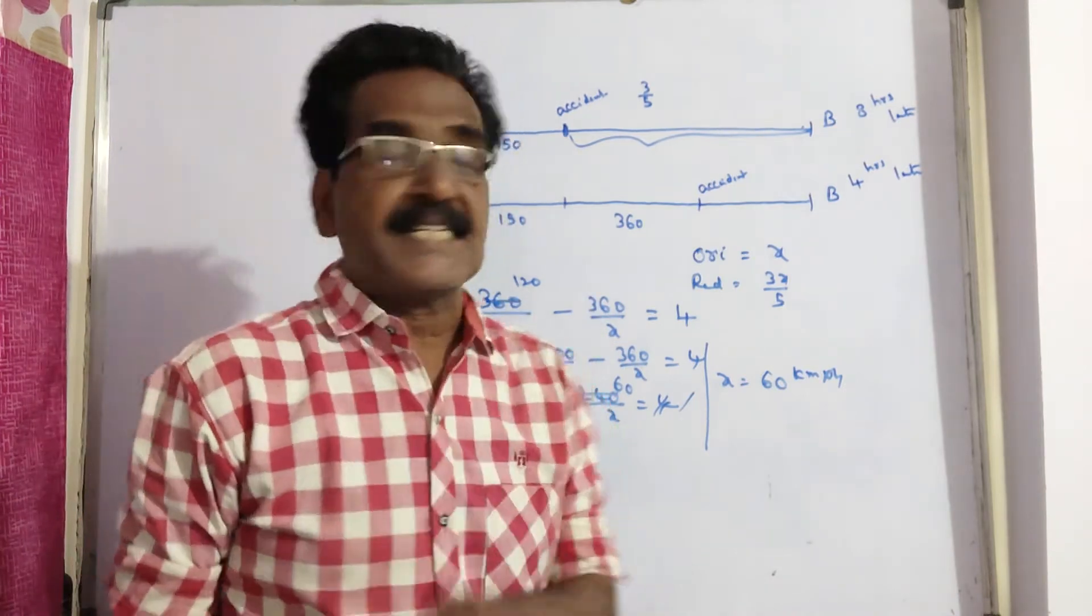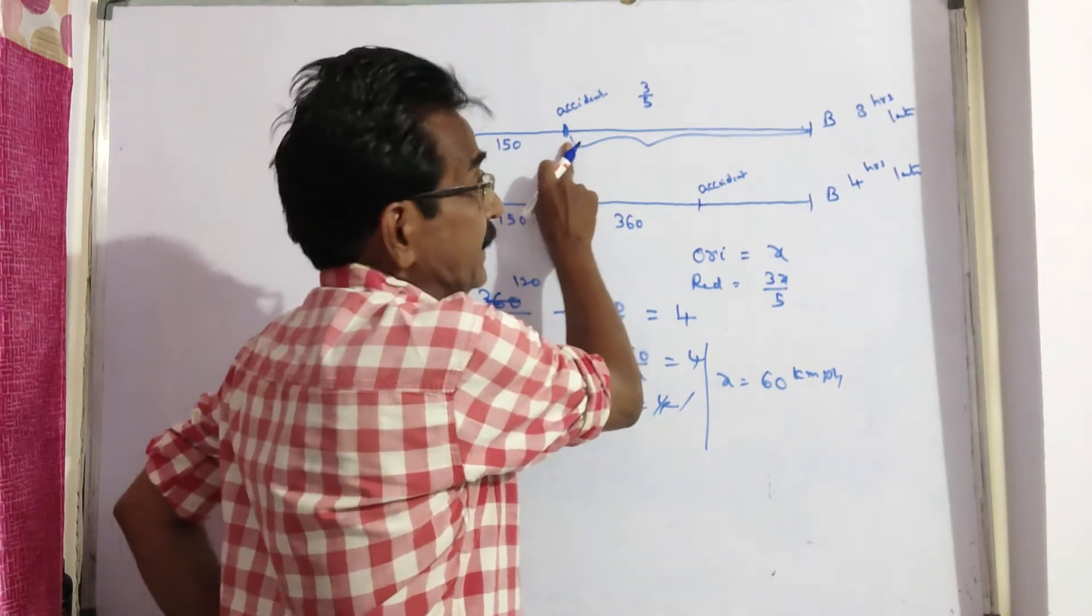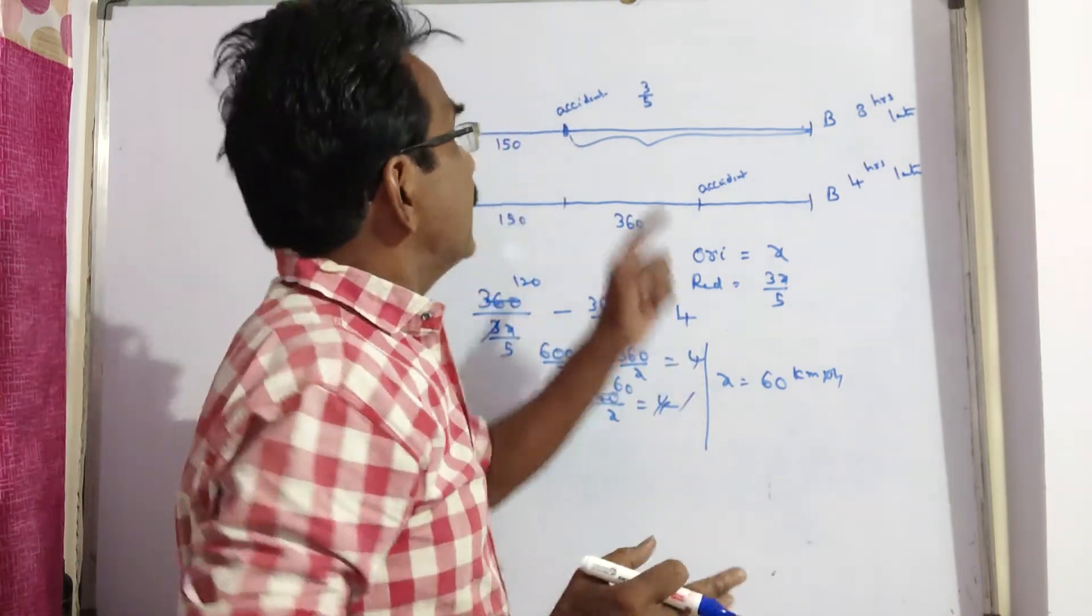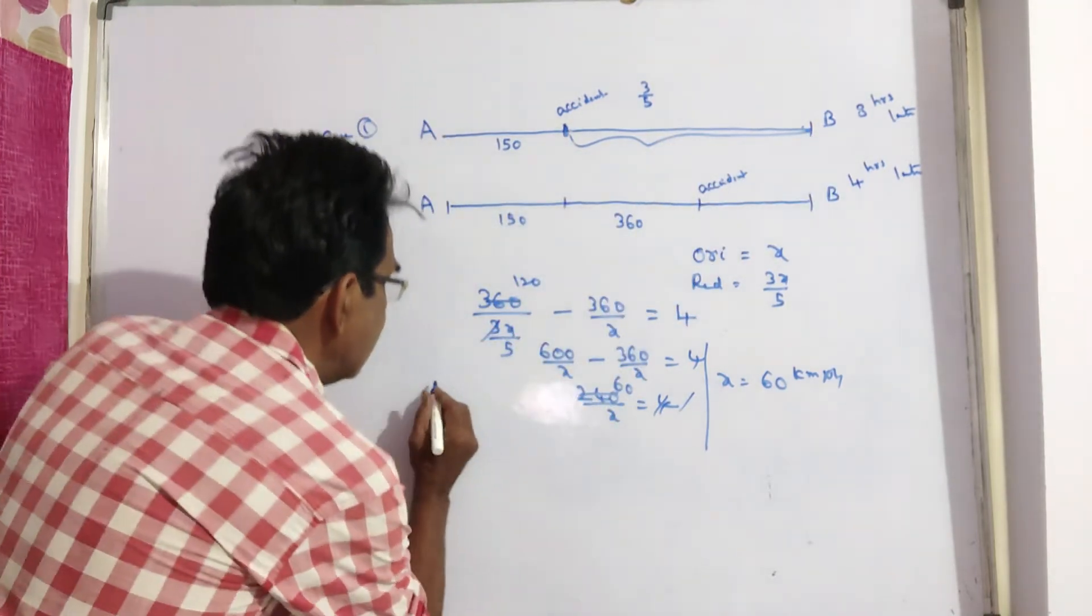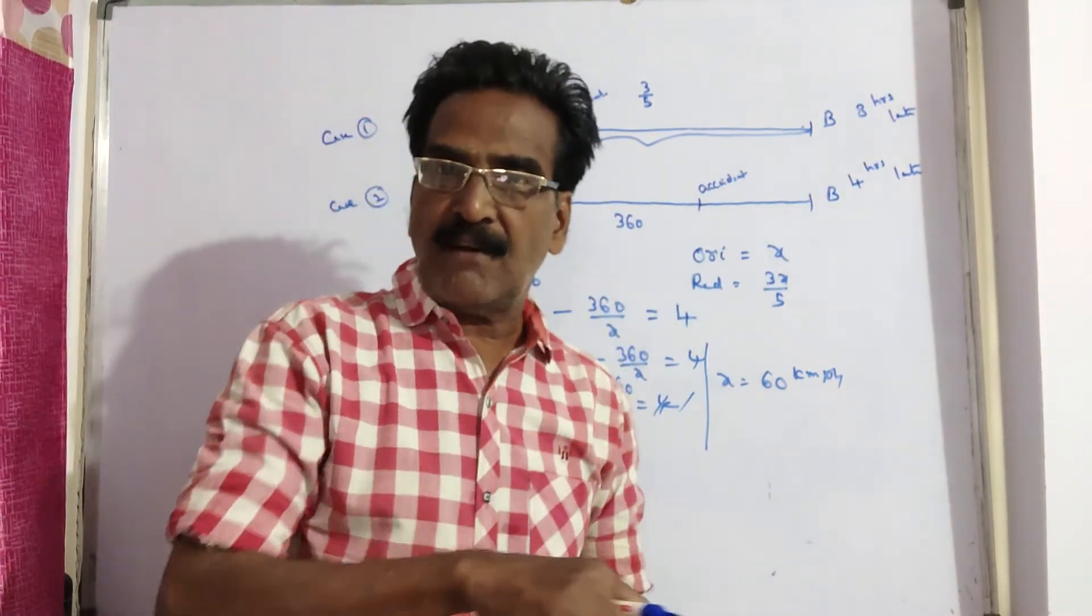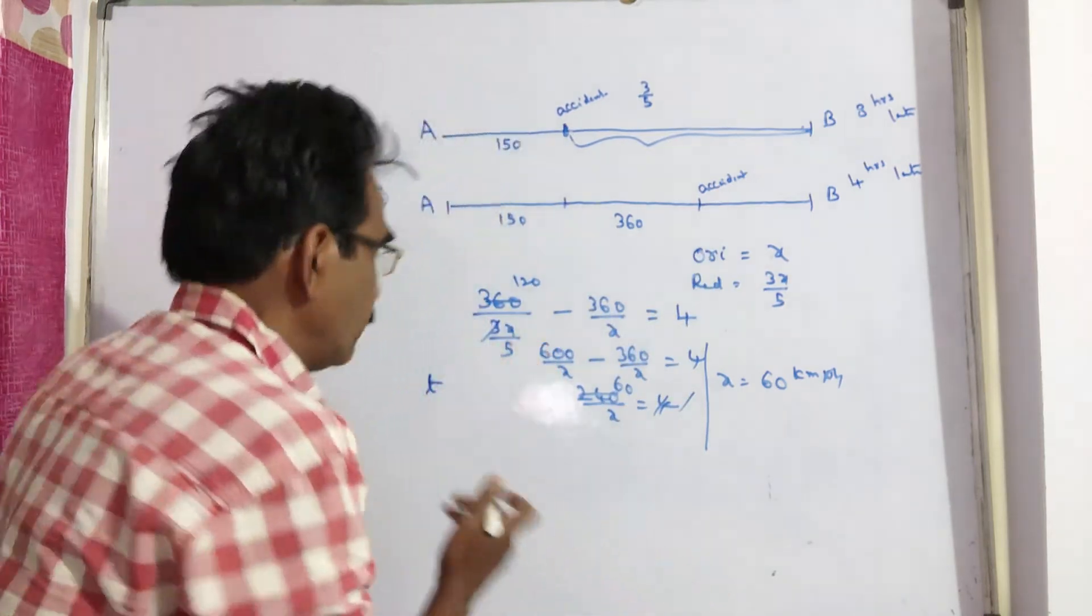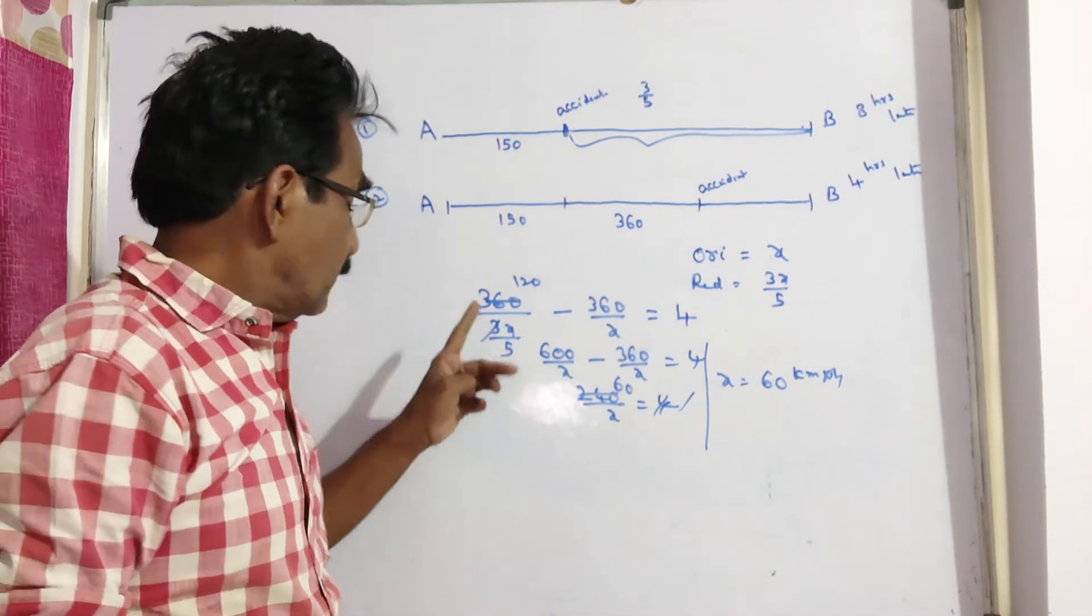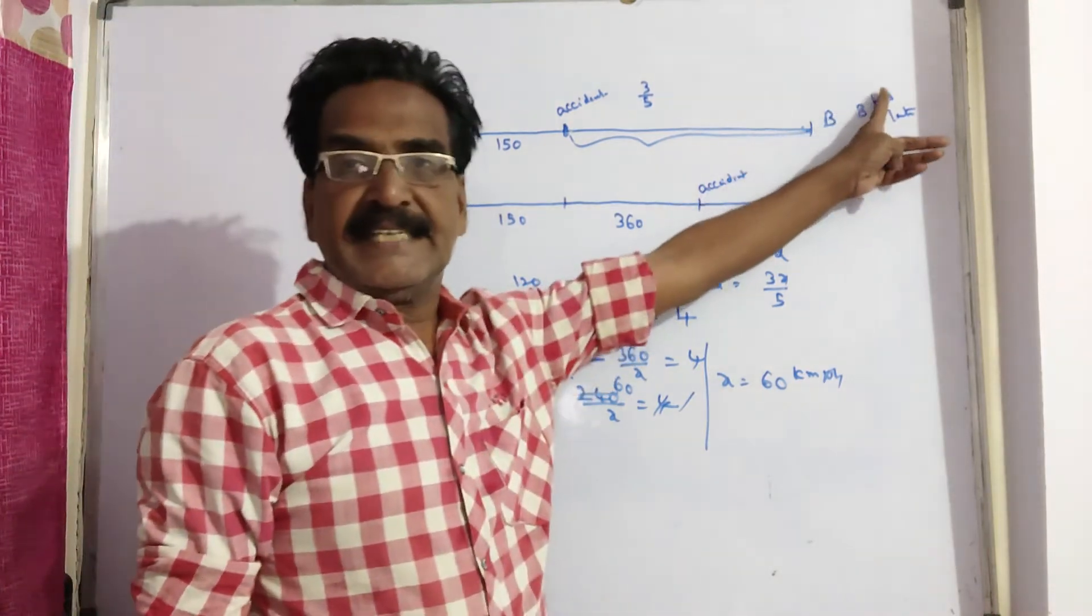Now let us try to find the distance. After the accident, let us take case 1. After the accident, it traveled 3x by 5 of its usual speed. Let us say the original time from this point to this point, say the original time is t. If the train travels with 3x by 5 of its usual speed, then it takes 5 by 3 of the usual time. This is the time taken with reduced speed. The difference between these two is 8 hours.